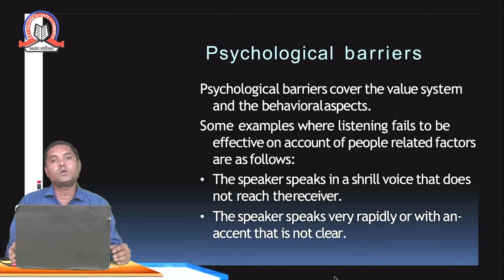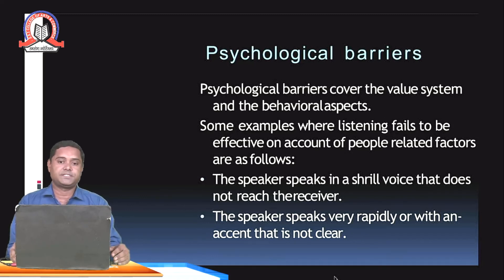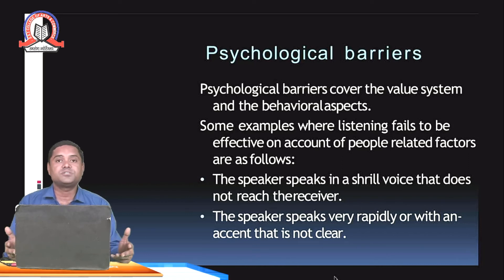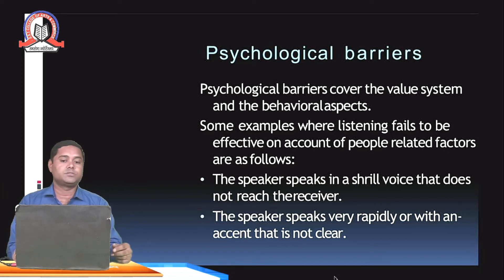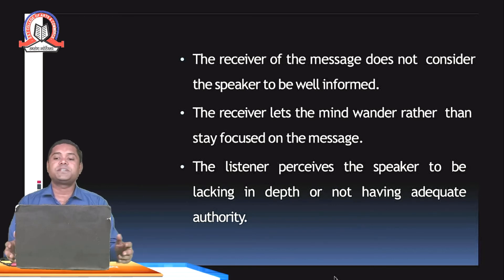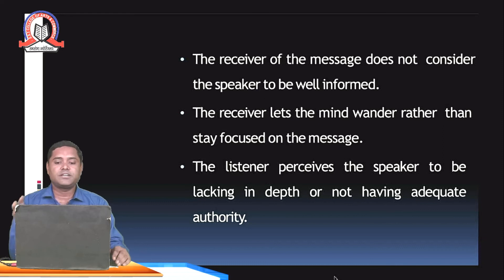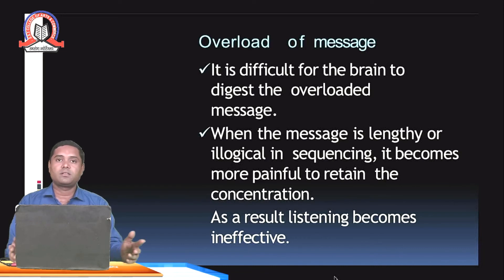There are also psychological barriers, which cover the value system and behavioral aspects. Examples include when the speaker speaks in a shrill voice, speaks very rapidly, or with an accent not understood by the receiver. The receiver may not consider the speaker to be well-informed, or the receiver lets their mind wander rather than stay focused. The receiver may also perceive the speaker as lacking in depth or not having adequate authority — these are psychological barriers.